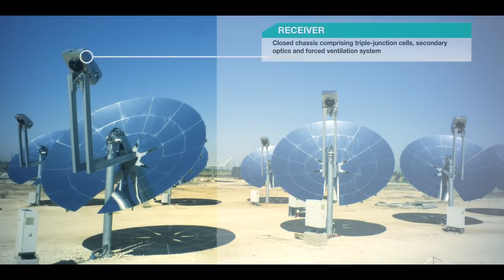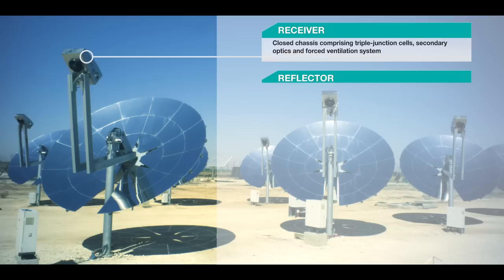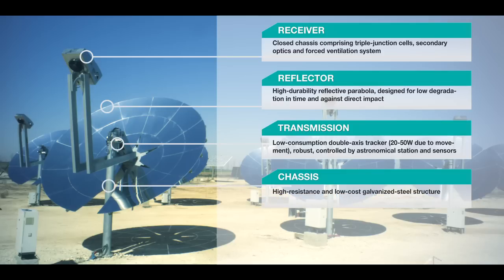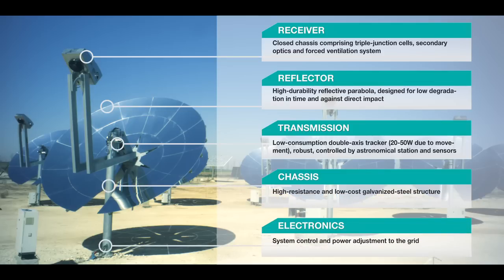A receiver with optics specially designed to achieve high efficiencies, and equipped with cutting-edge technology cells. A parabolic reflector, a high-precision double-axis solar tracker, a robust chassis, and the power electronics needed for the smooth functioning of the system.